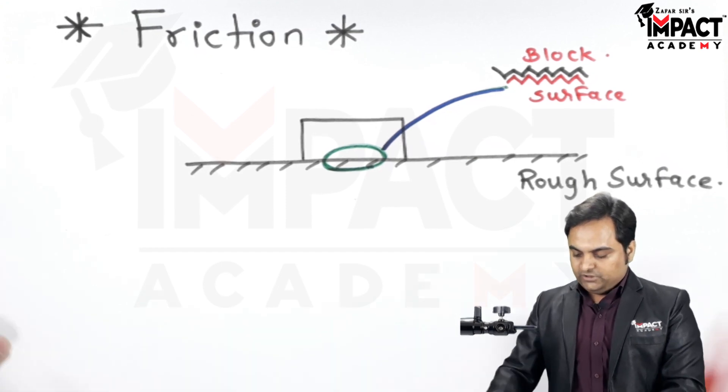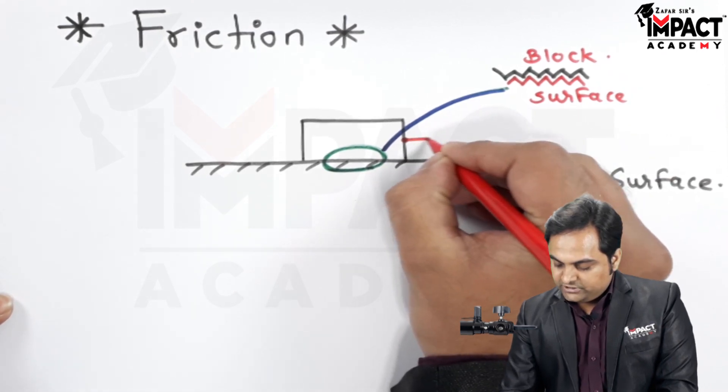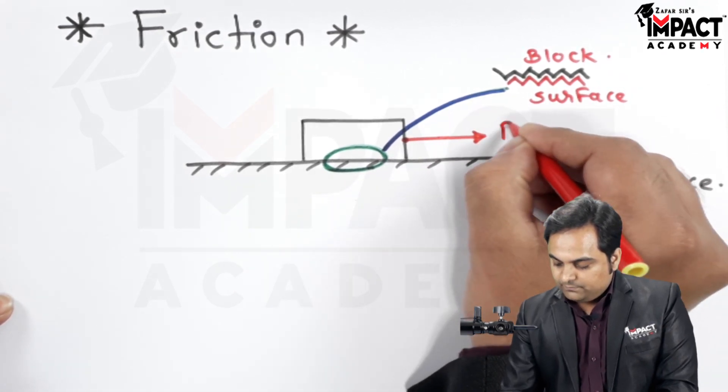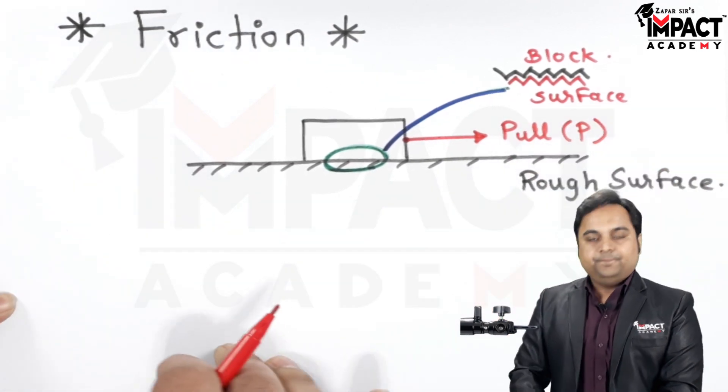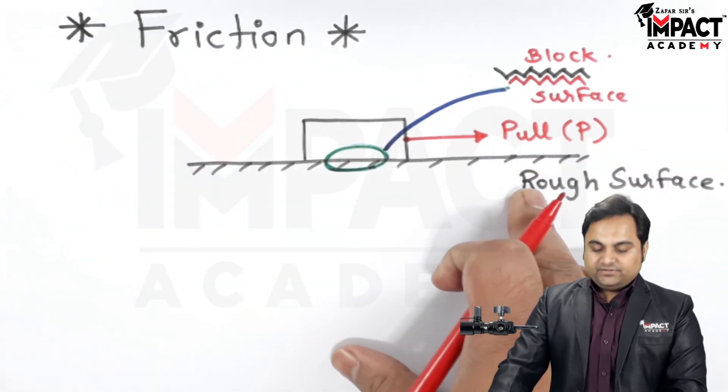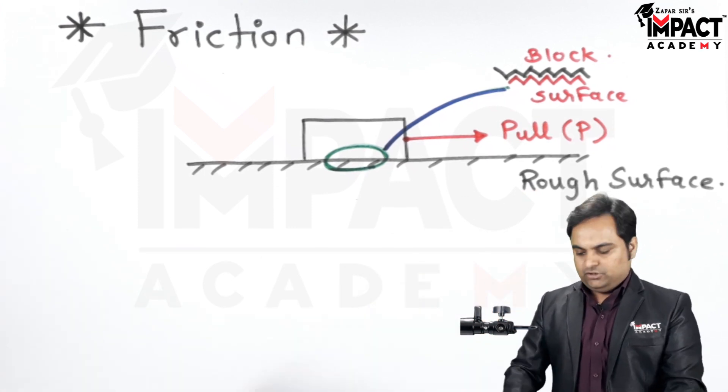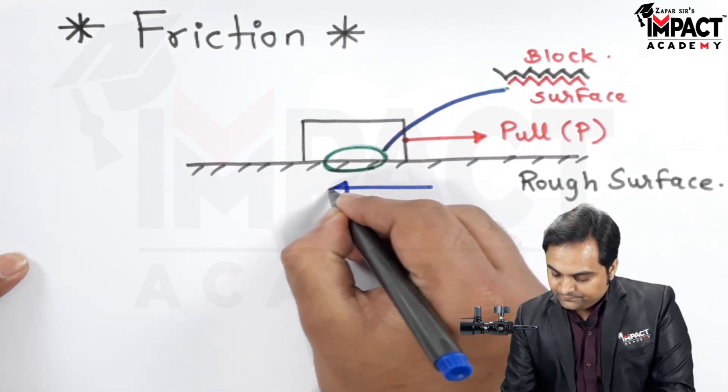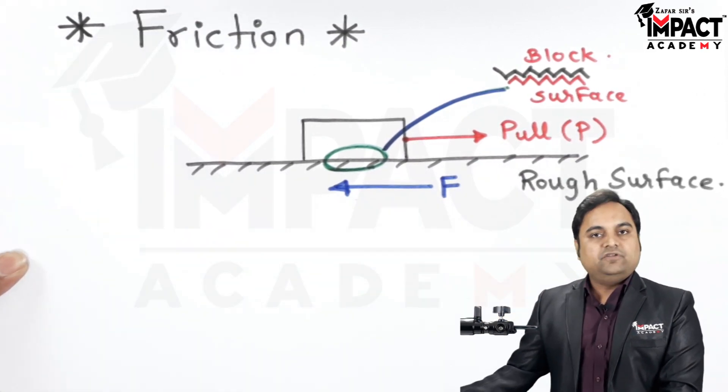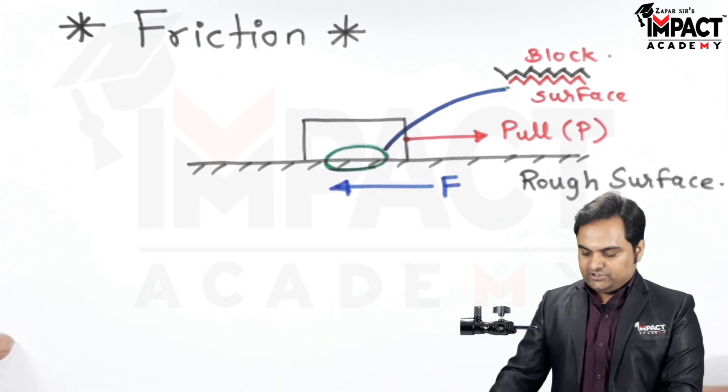Now, the moment we try to apply a force or try to pull this block by applying a pull capital P, then there is a force which is acting in the opposite direction to this pull and that force is called as the frictional force.